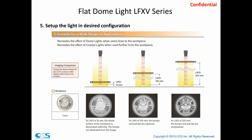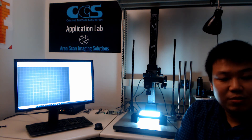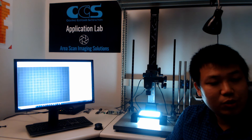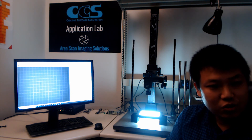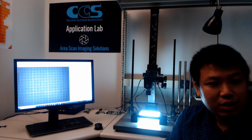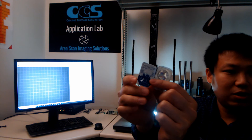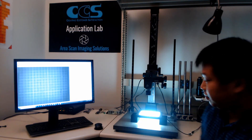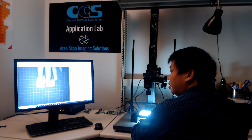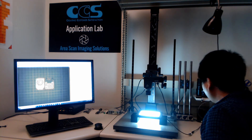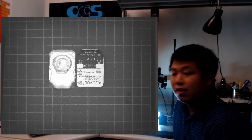Here is a simple introduction about the FlatDome LFXV. Now let's look at some more samples. I'm going to show 5 samples in total, to give you some idea of what kinds of applications are best fit for the FlatDome LFXV. The first sample is a contact lens. The package of the contact lens has a lot of wrinkles and is very specular, which makes it really hard for traditional lighting. But under the LFXV, we can create a very uniform, shadow-free image for both the front side and the back side.